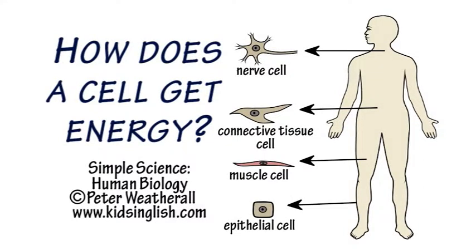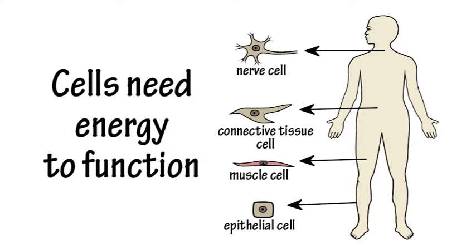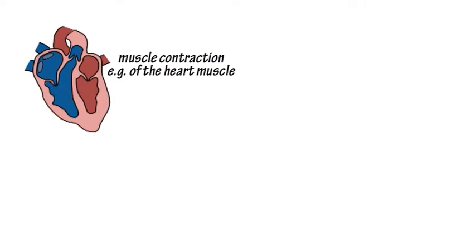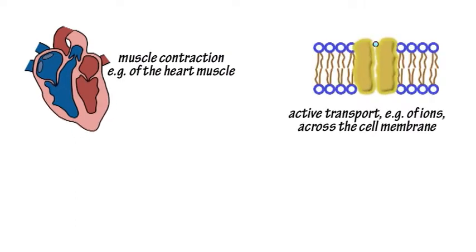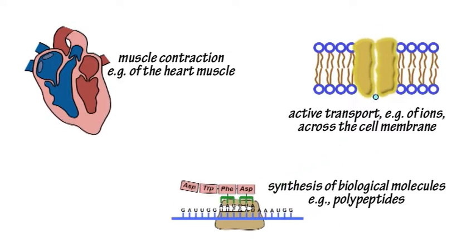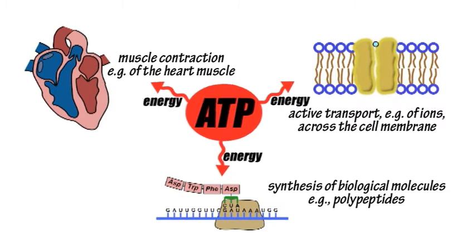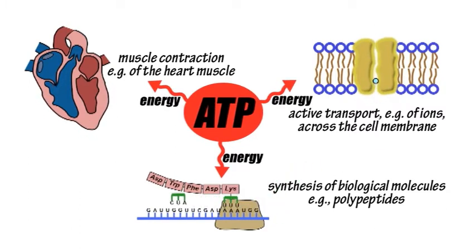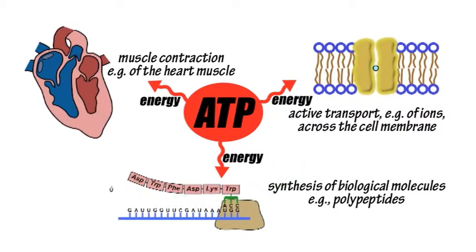Simple Science: How does a cell get energy? Many cellular activities and processes require an input of energy — for example, muscle contraction, active transport of molecules across membranes, and the synthesis of biological molecules such as polypeptides and polynucleotides. ATP provides a store of chemical energy that cells can readily access to drive these processes forward.